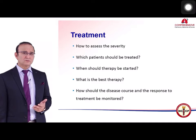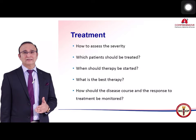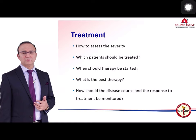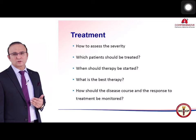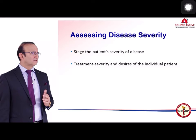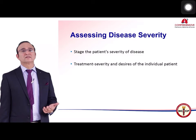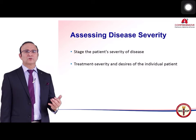When coming to treatment, it is very important to assess severity, as this helps categorize patients and follow them up — determining which patients should be treated, when therapy should be started, what the best therapy is, and how disease course and treatment response should be monitored. A disease management plan is tailored to disease severity and the individual patient's desires, given the poor prognosis.